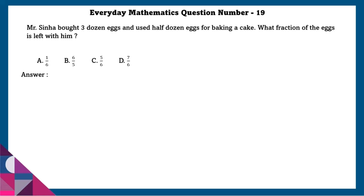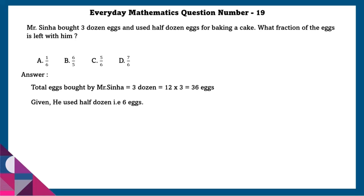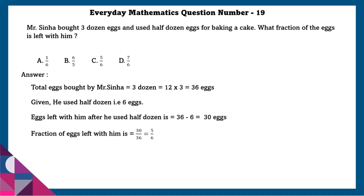Question 19: Mr. Sinha bought three dozen eggs and used half a dozen eggs for baking a cake. What fraction of eggs is left with him? Total eggs bought is 3 dozen, which is 3 × 12 = 36 eggs. He used half a dozen, that is 6 eggs. Eggs left is 36 minus 6 = 30 eggs. Fraction of eggs left is 30/36, that is 5/6.